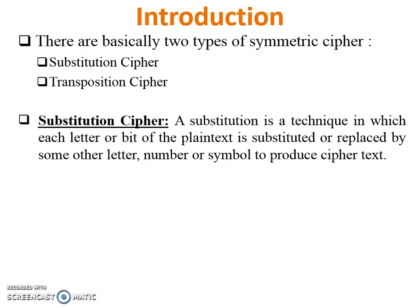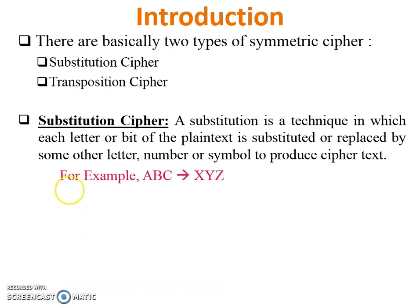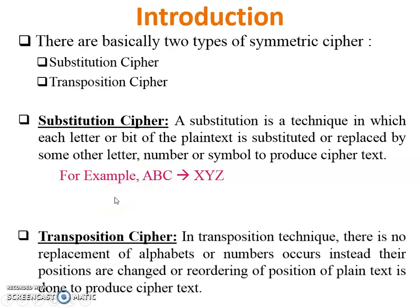Substitution cipher means each letter or bit of the plaintext is substituted or replaced by another letter, number, or symbol to produce a ciphertext. For example, ABC is the plaintext and XYZ is the ciphertext of ABC.